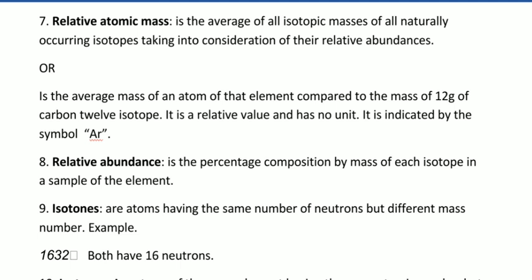Relative abundance is the percentage composition by mass of each isotope. Maybe carbon-12 has contributed 80%, carbon-14 has contributed 20%. So the relative abundance of carbon-12 will be 80%, and the relative abundance of carbon-14 will be 20%.